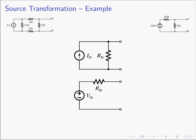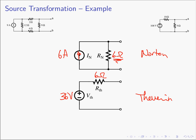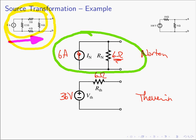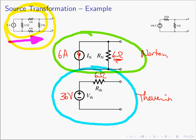We can do one more source transformation: the 6-ohm Norton resistance becomes a 6-ohm Thevenin resistance, and 6 amps into 6 ohms gives 36 volts. So we started with the original circuit and performed repeated source transformations — collapsing Norton to Thevenin and Thevenin to Norton — combining elements until reaching this simplified result. Going back and computing the Thevenin and Norton equivalents directly from the original circuit would confirm these same values. This is an alternative way to find Norton and Thevenin equivalents using source transformation.